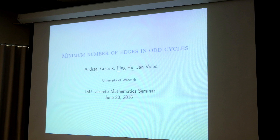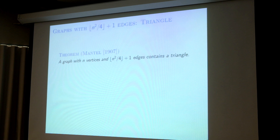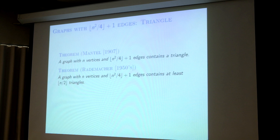So we start from which family of graphs. You want to look at the number of edges in odd cycles, so such a family of graphs should have at least one odd cycle. So you may start with graphs with n²/4 + 1 edges. One of the fundamental theorems by Mantel says such graphs would contain at least one triangle. After you know a graph with n²/4 + 1 edges contains a triangle, you may ask how many triangles it has. Then Ruzsa-Szemerédi shows that it contains at least n/2 triangles instead of one.